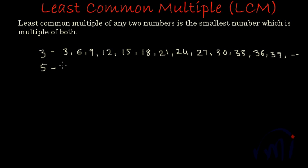And the multiples of five can be written as five, 10, 15, 20, 25, 30, 35, 40, and so on.